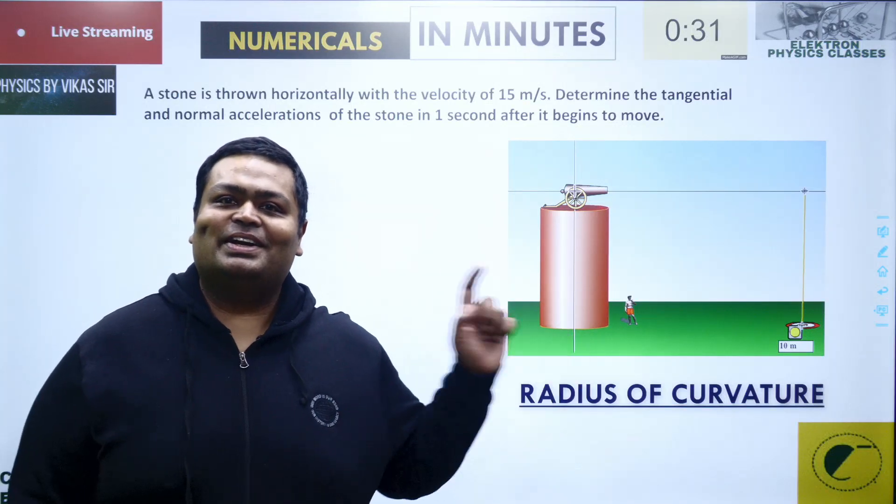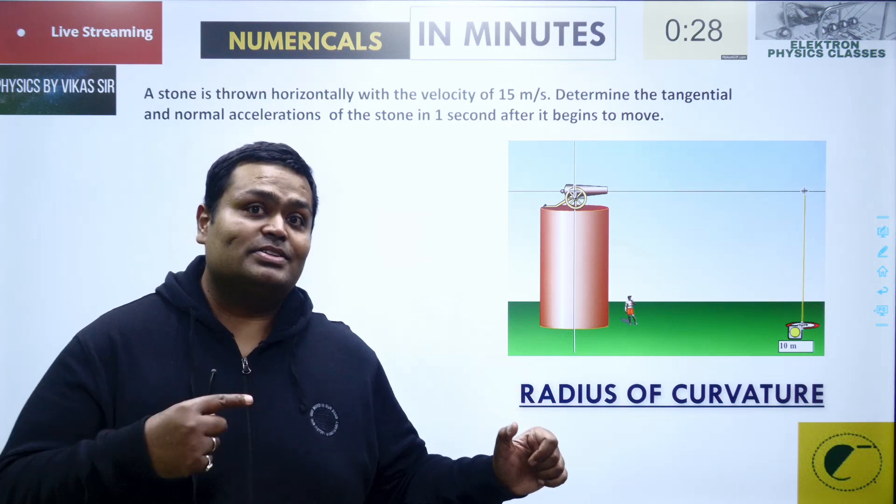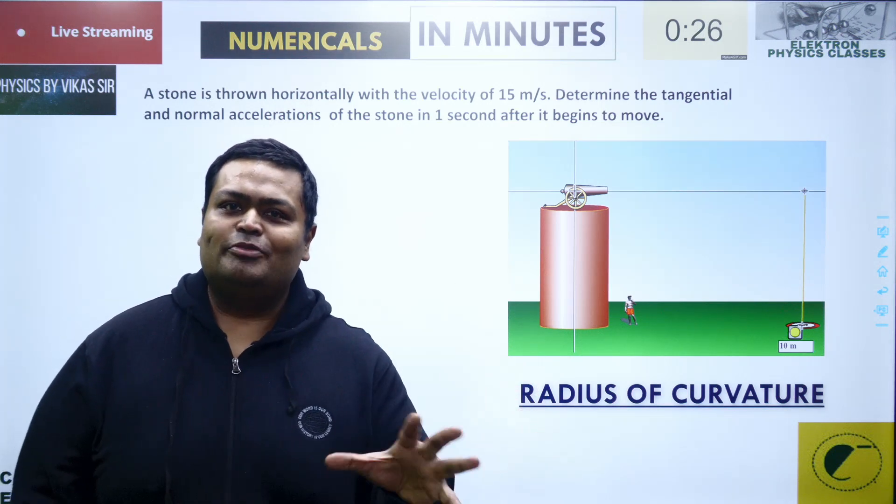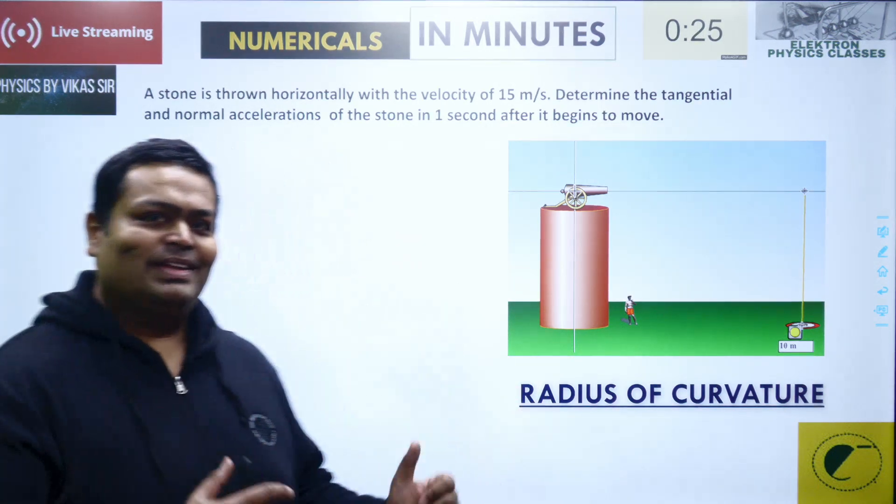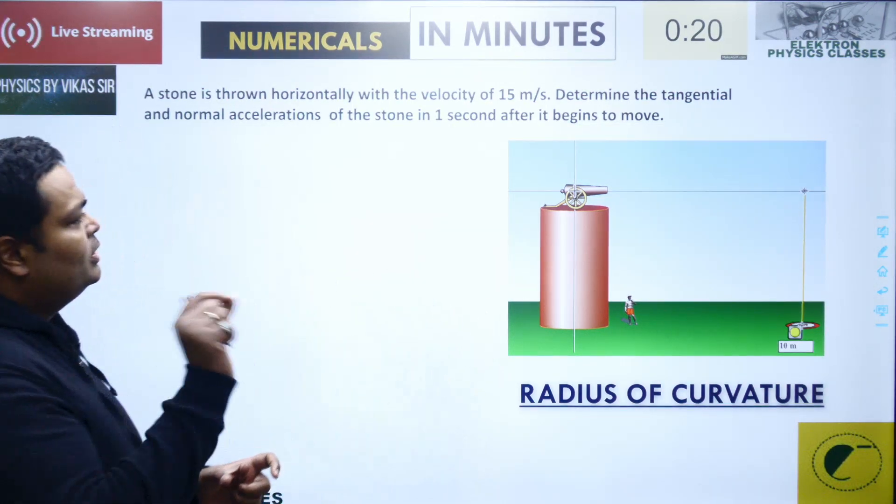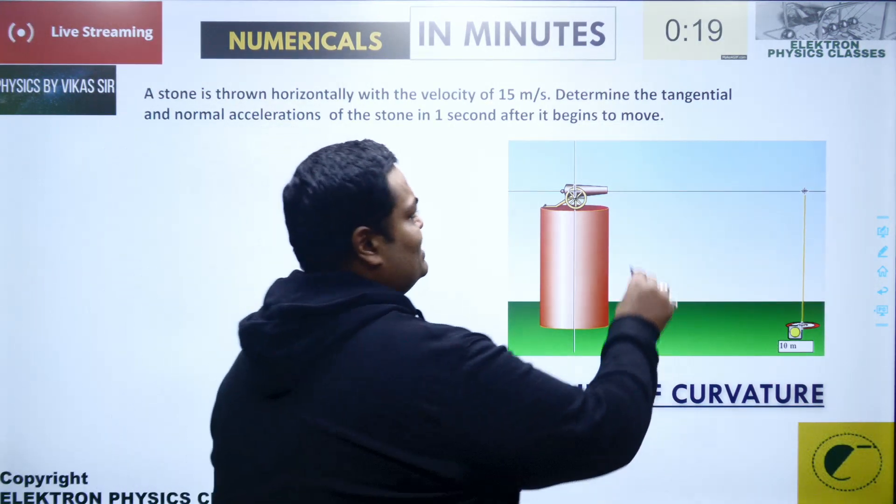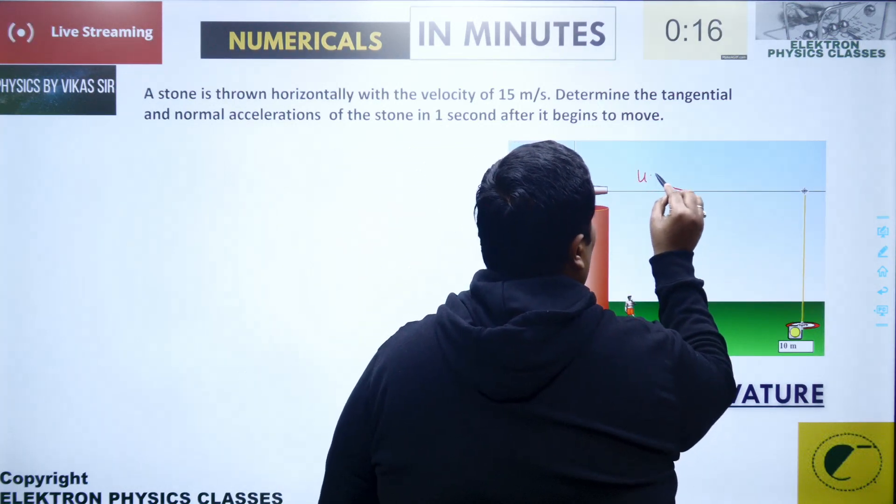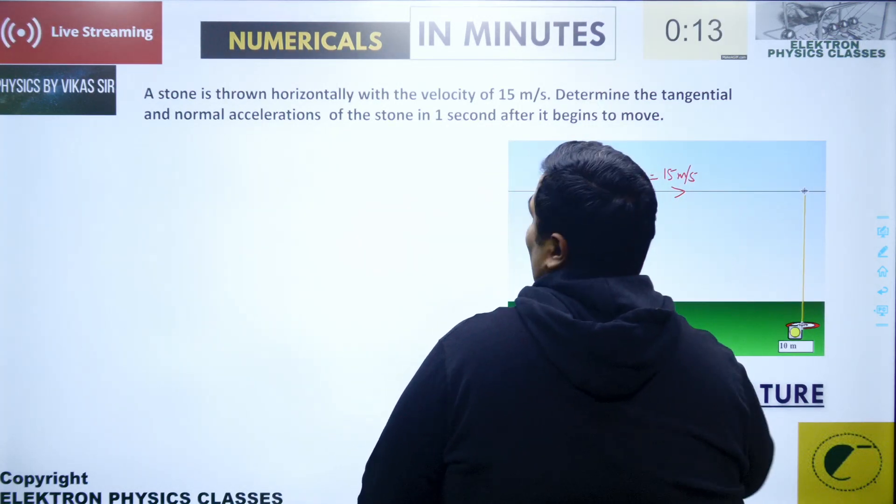Namaskar, we are into numerical solving in few minutes. Let's kick start solving it. The question is: a stone is thrown horizontally with a speed of 15 meter per second.